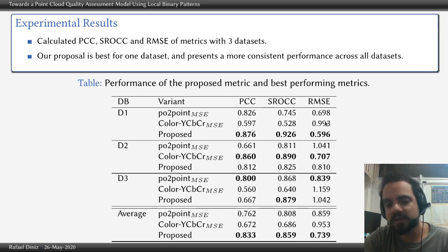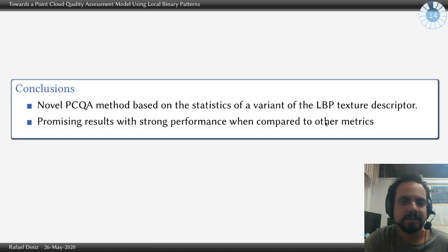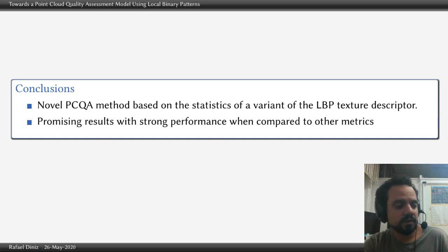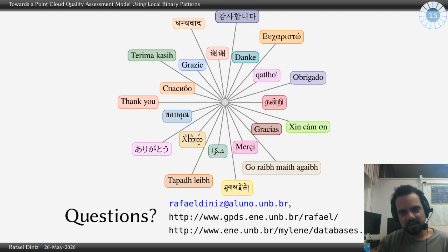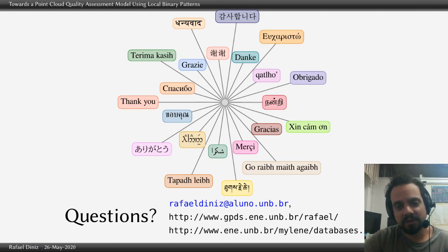We think this is a good sign that we are on a path that can give good results, and it is still computationally efficient and fast to run. The conclusions are that we have a novel point cloud quality assessment metric using the LBP texture descriptor, with strong performance that we can evolve into a metric that can be used where needed. Thank you very much.